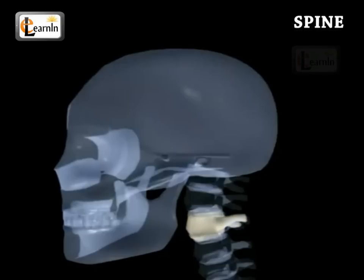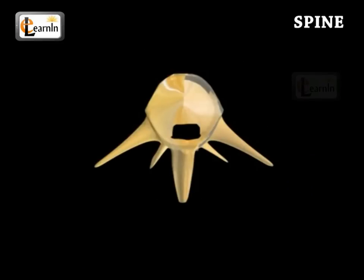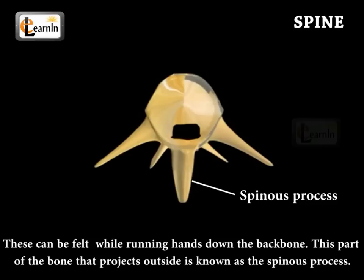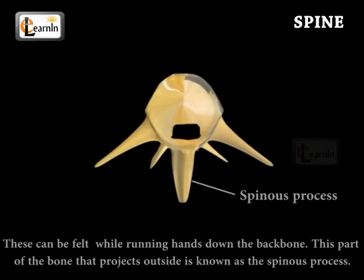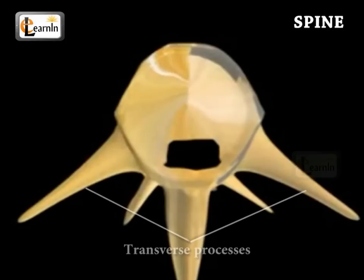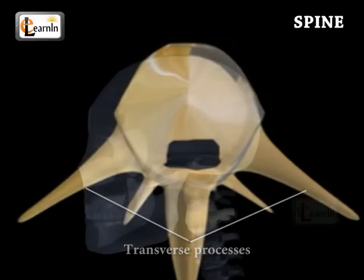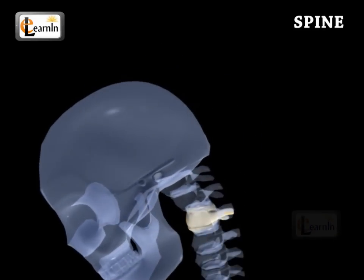The spinal nerve passes through the spinal canal. Part of the spine bones seem to be projecting outside the spine, and these can be felt while running hands down the backbone. This part of the bone that projects outside is known as the spinous process. The spinous process is paired with two transverse processes, which are oriented at 90 degrees to the spinous process, one on each side. They provide attachment to the back muscles.